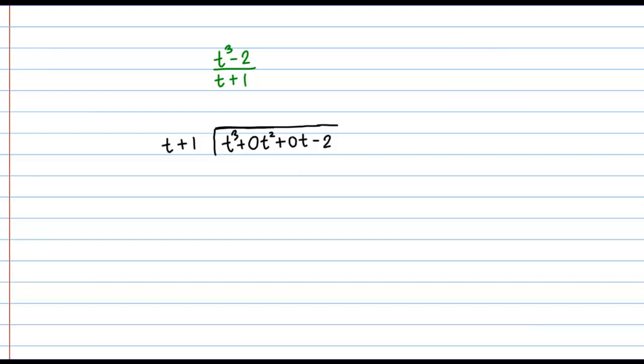How does this process of long division work? What I'm going to be doing to start out with is I'm going to be looking at this first term under the division sign and this first term outside the division sign. I'm going to ask myself how many times does t go into t cubed? Or perhaps a more helpful question would be t times what equals t cubed? The answer in this case is t squared. T times t squared gives me t cubed. Then I'm going to put a t squared on top here.